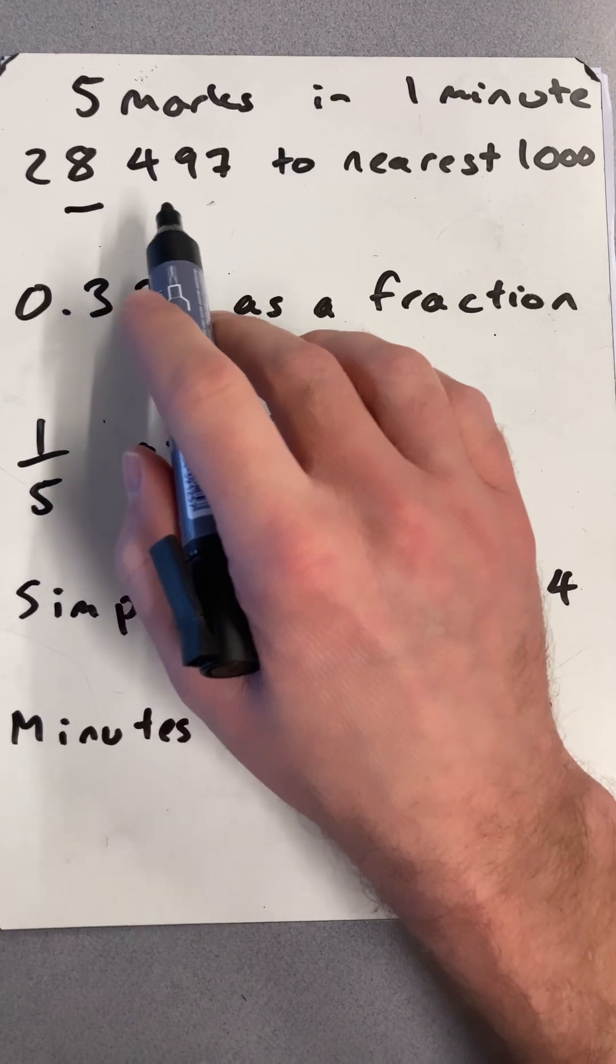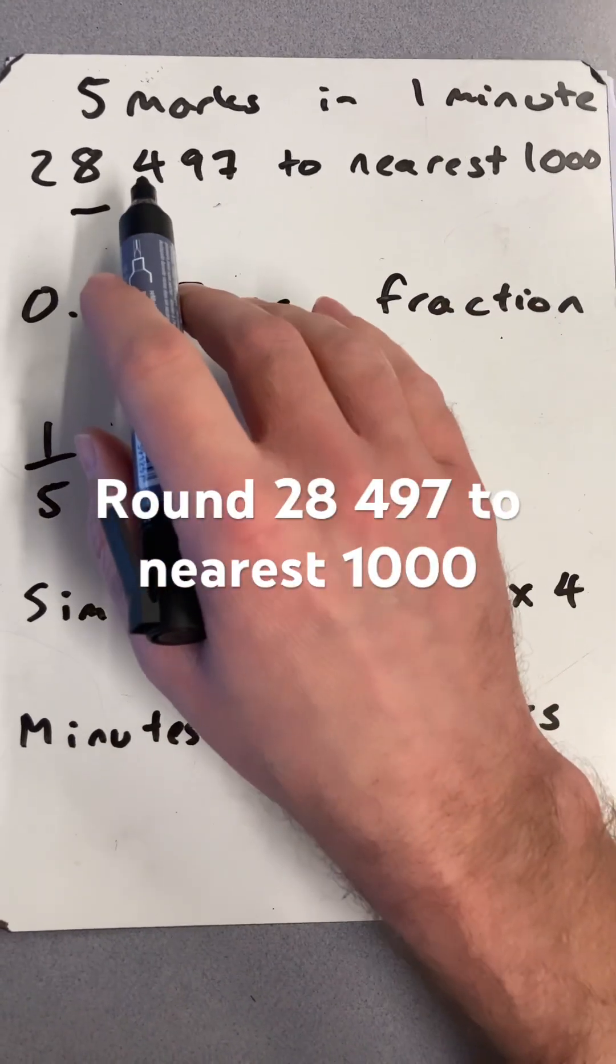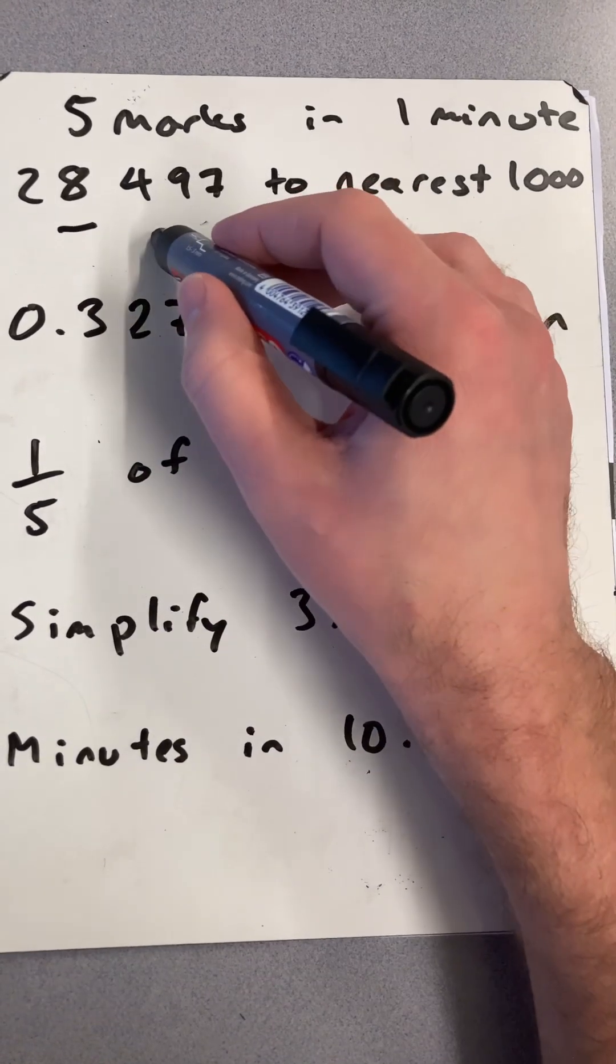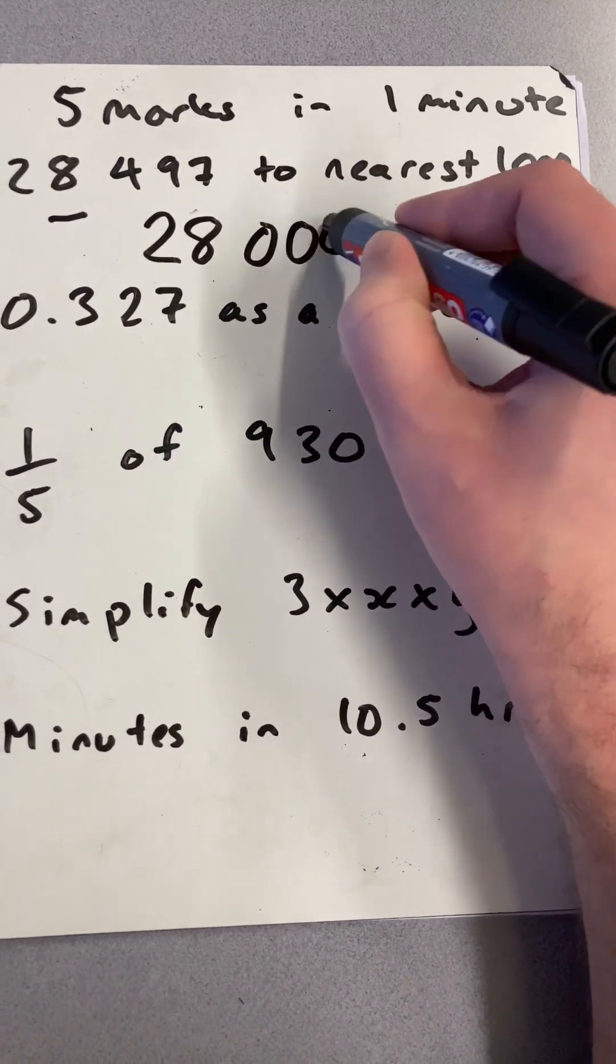We have to round 28,497 to the nearest thousand. The hundreds is smaller than five, so this is closer to 28,000 than 29,000. So we do 28,000.